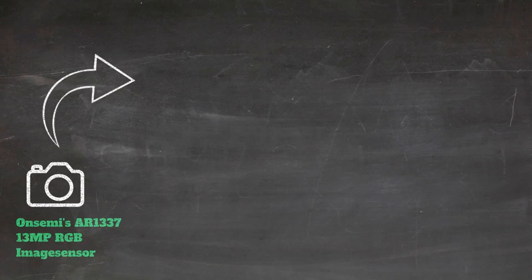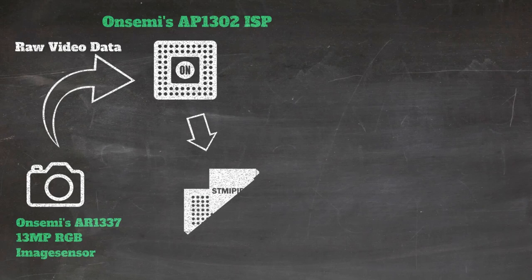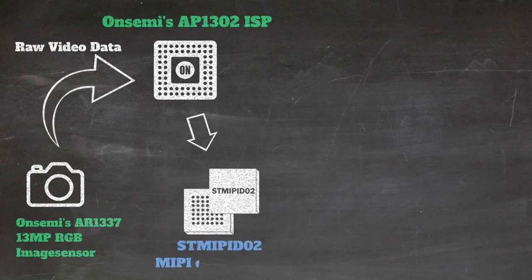Let's have a closer look at the demo itself and go through the data flow in detail. The camera module is based on a 13MP image sensor from OnSemi and provides video data in raw format. To have it in an easily processable format, we convert the stream into YUV using the ISP AP1302 from OnSemi. At this point all data is still transferred on MIPI lines, which are not available on the host processor, so we use the STMIPI-D02 MIPI deserializer to change our interface to parallel.